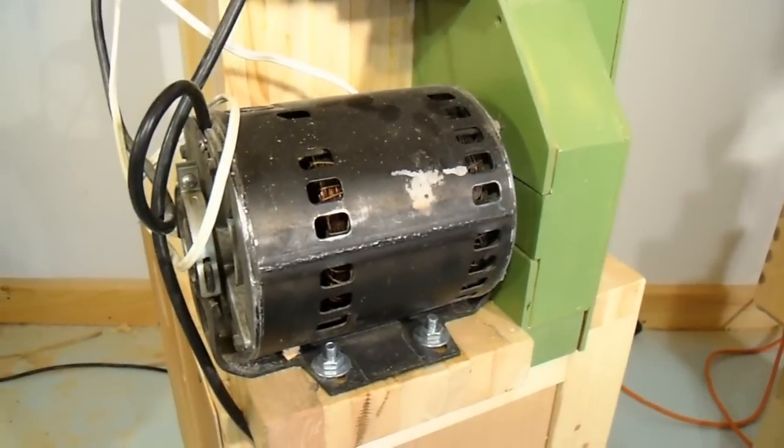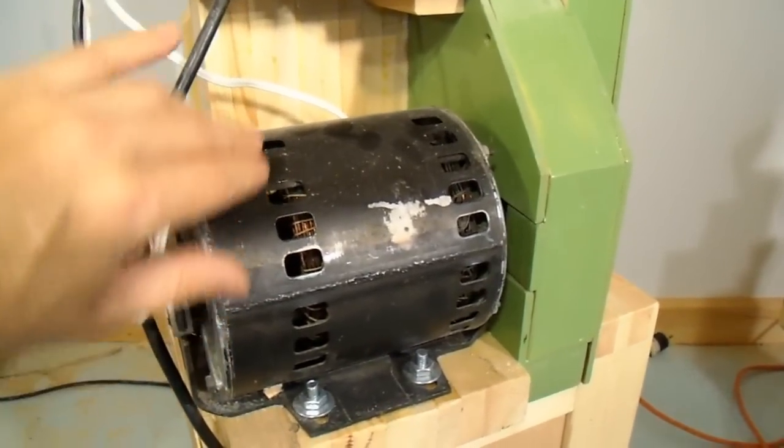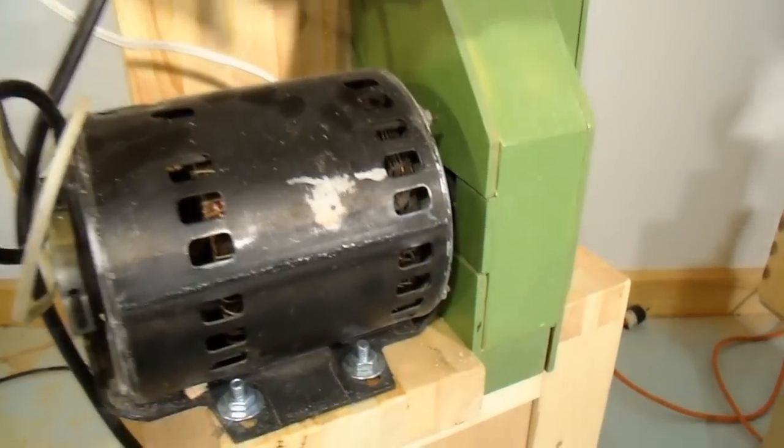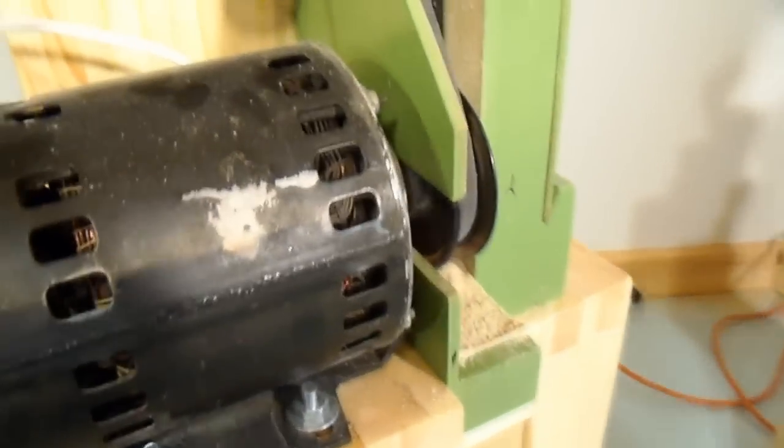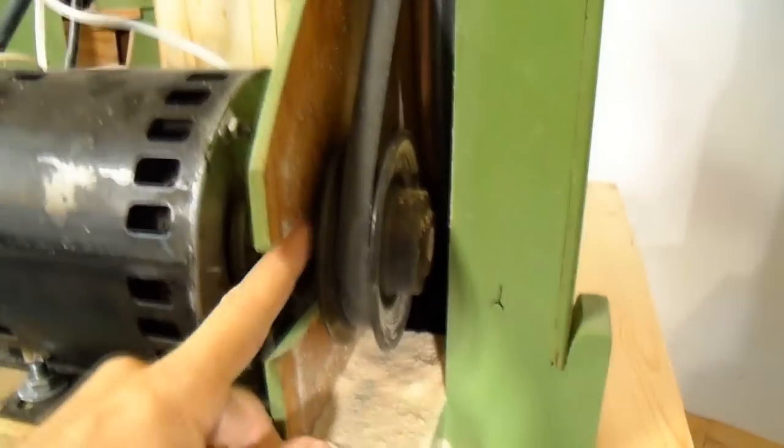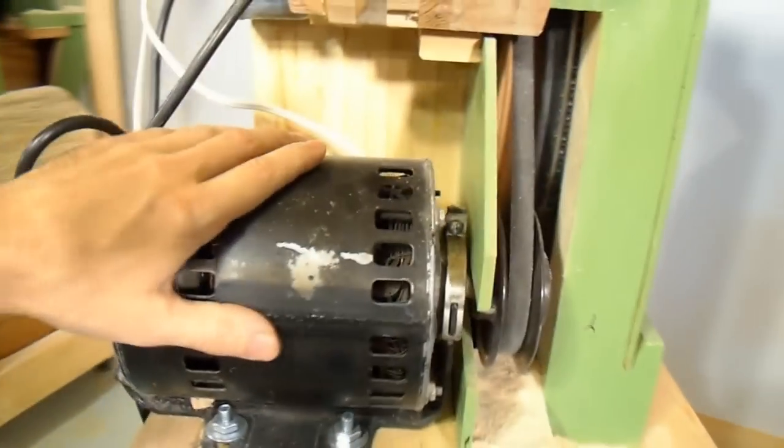On my old bandsaw I just used an old 1750 RPM furnace motor. That motor has really worked out well. It's very quiet and I just have a V-belt on there. The pulley is much larger because the motor is slower. The 1750 RPM motor runs much quieter than this one does.